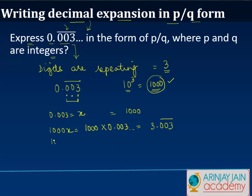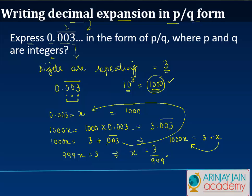So you have 1000x equals to 3 plus 003 point which is repeating itself. But we know that the value of this 0.003 is equal to x, or in other words we can just write this as 1000x is equal to 3 plus x. Take the x to the other side you will get 999x is equal to 3, or in other words x is equal to 3 divided by 999 or 1 upon 333.